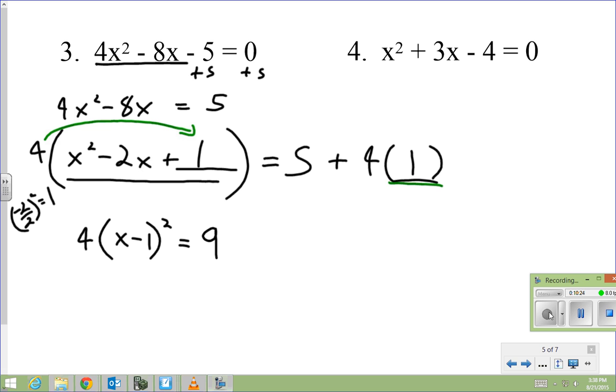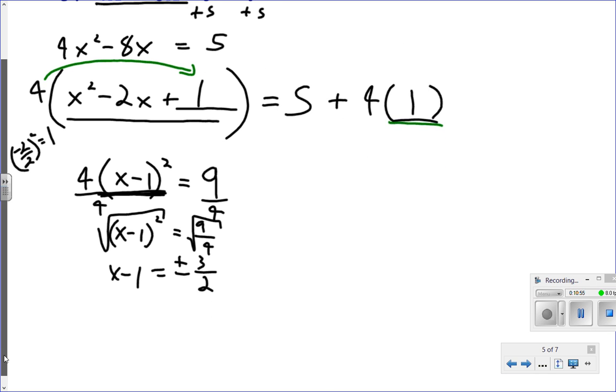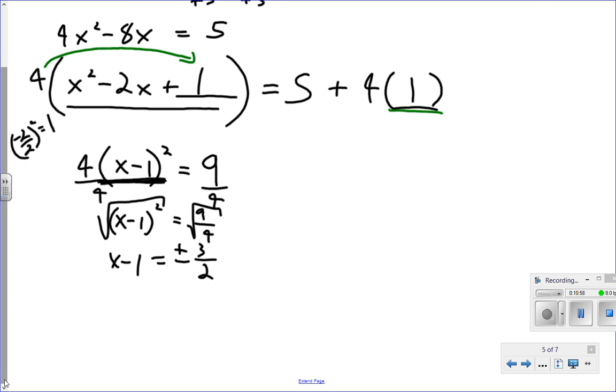Isolating my binomial. Here, I want to isolate my binomial. So I'm going to divide both sides by 4. So I get x minus 1 squared equals 9 fourths. Square root both sides. When I square root both sides, I remember I have a minus and a positive. So plus and minus square root of 9 is 3. Square root of 4 is 2. So I can simplify that by doing the radical of the numerator and denominator independently.